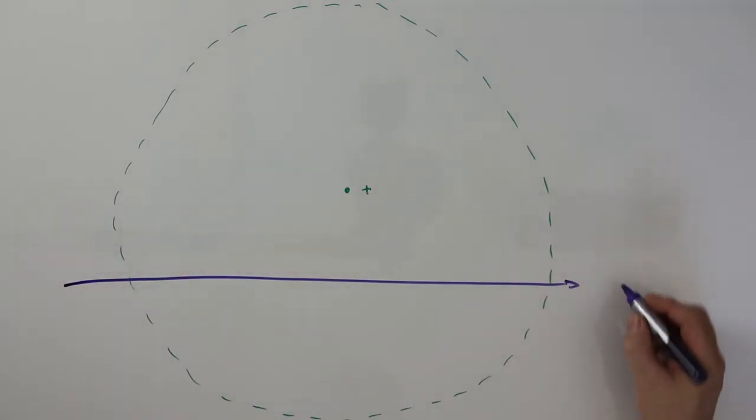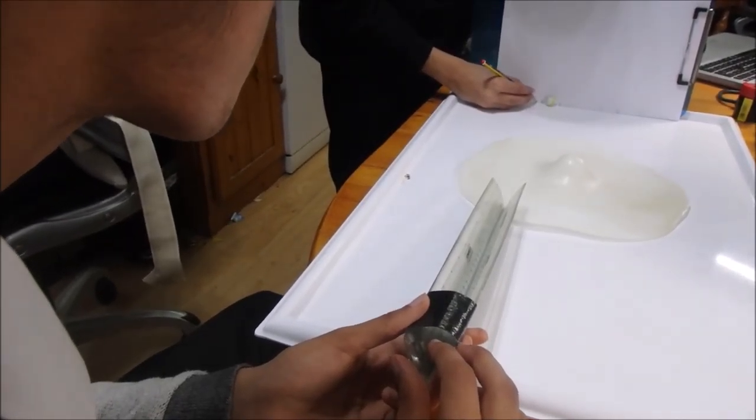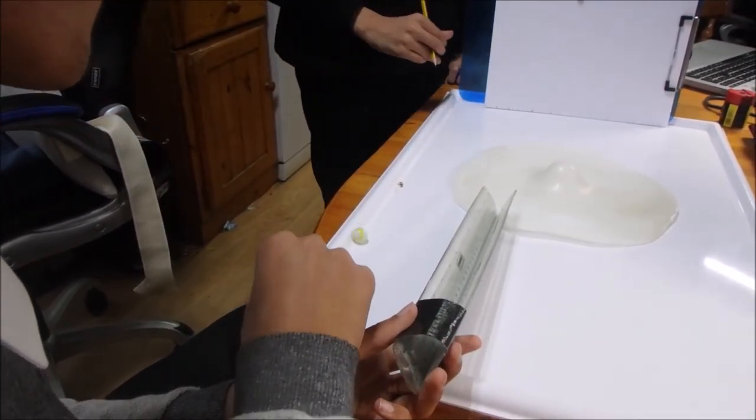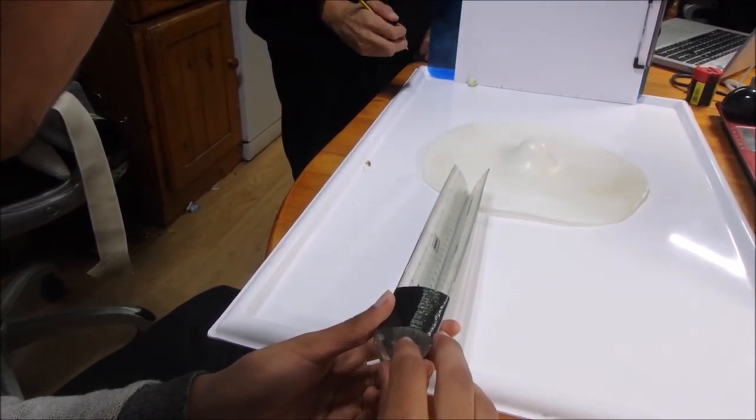And this alpha particle is the same sort of size as that nucleus. It's actually even smaller. And it's also positively charged.